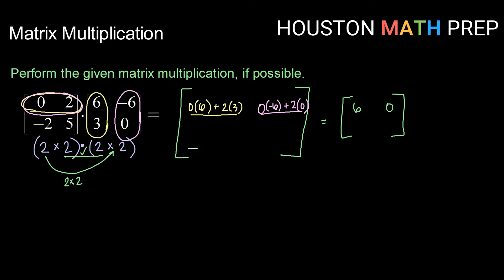Moving down to row 2 column 1, that means I will take row 2 and distribute it into column 1. So row 2 column 1 goes in row 2 column 1. So that is negative 2 times 6 plus 5 times 3, or negative 12 plus 15 is 3.